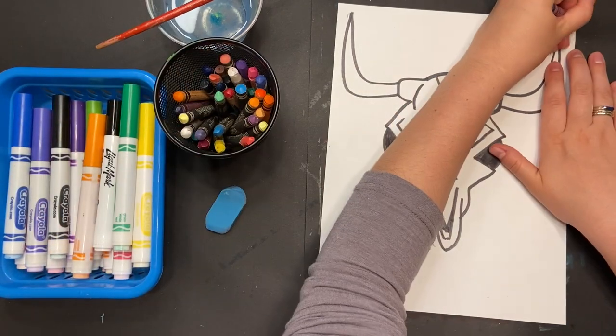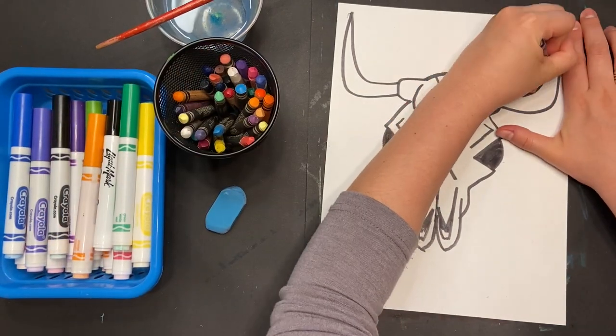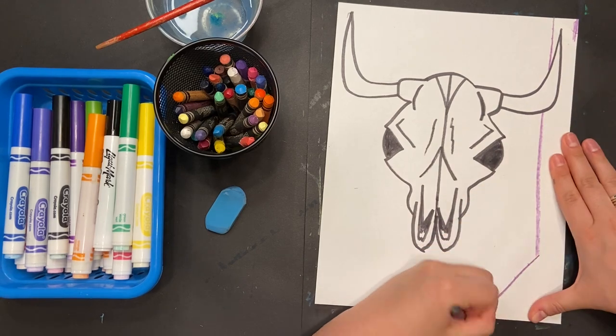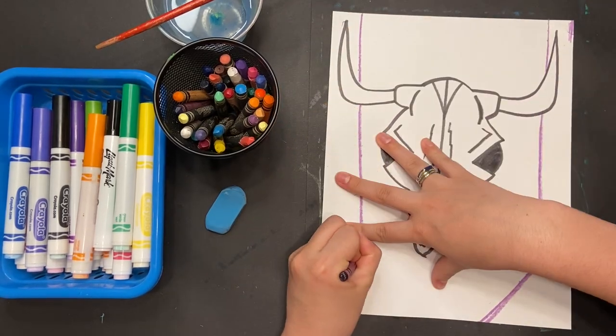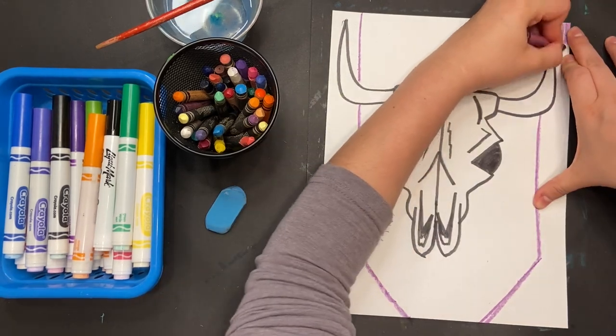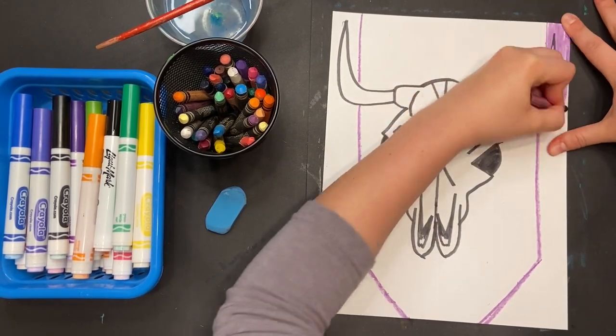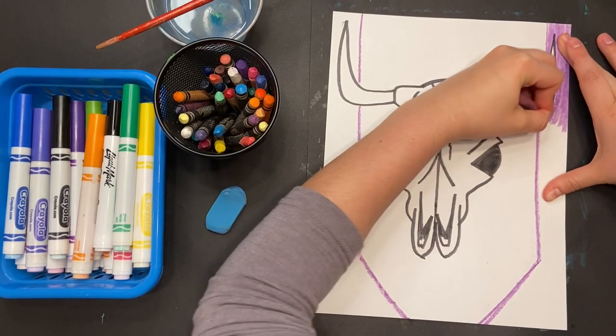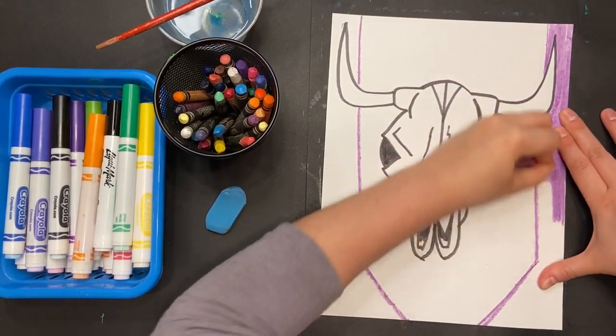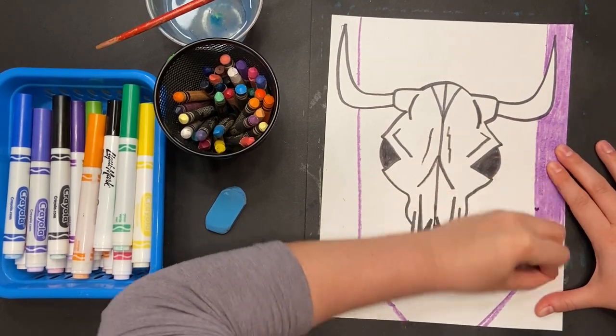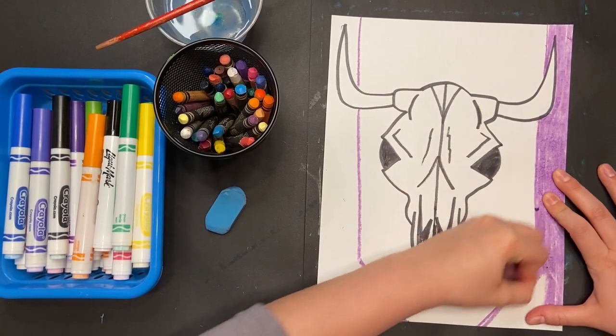Once you're done with your outlining, use crayons to do your background. I'm using crayons because when we add the water for all the shadows on our cow skull, we don't want the background to bleed into our cow skull. So I want to use the crayons or oil pastels because those will create a water resist and will not be affected by the water.